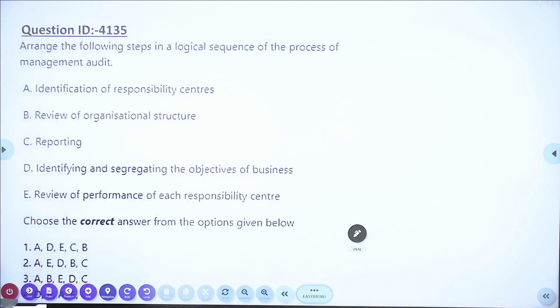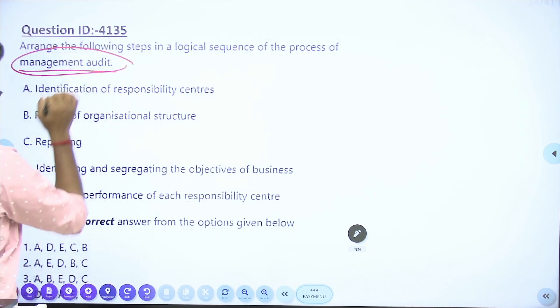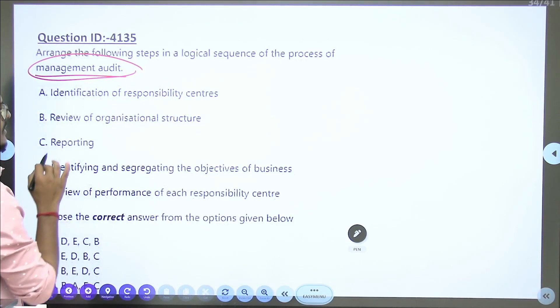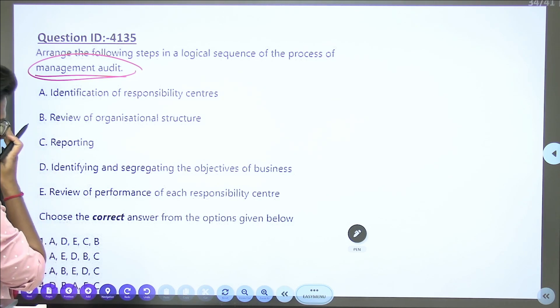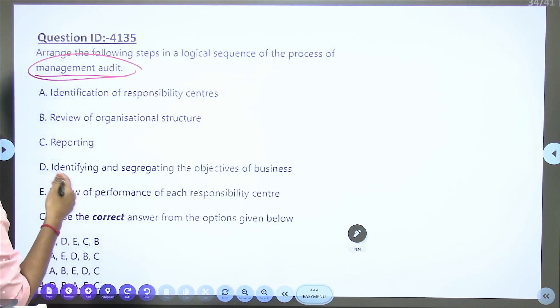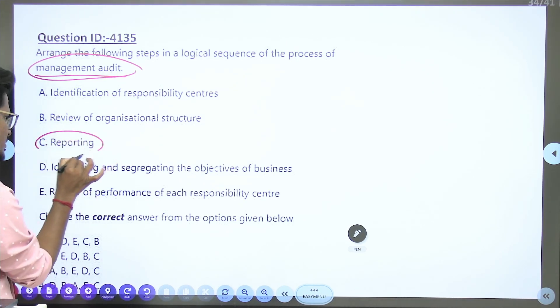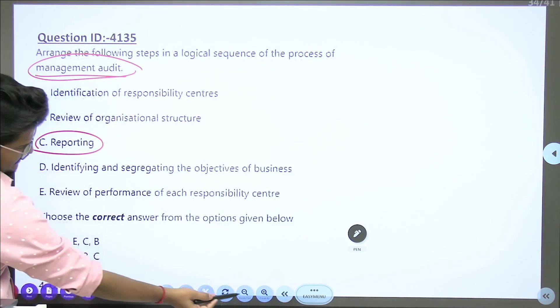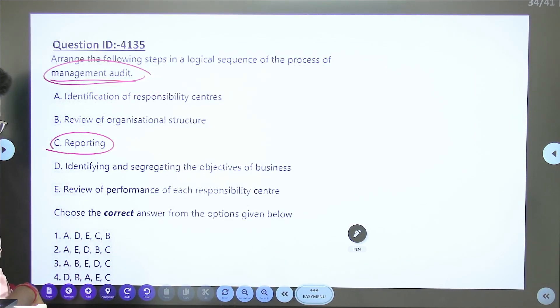Next question: arrange the following steps in logical sequence of process of management audit. Identify responsibility center, review organizational structure, reporting, identifying segment and object of business, review performance of each responsibility center. I believe reporting should be at the end. In three options, C is there at the end. What should be beginning - identifying center or identifying segments? Answer is D.